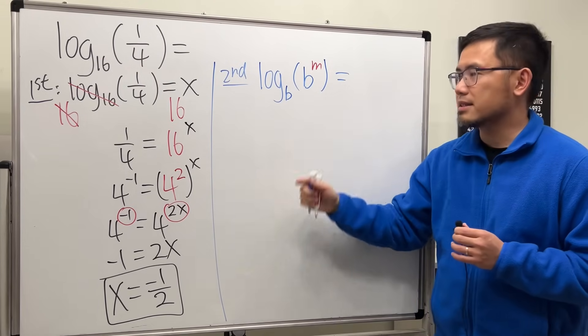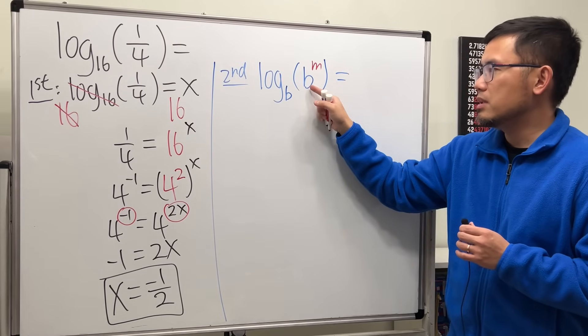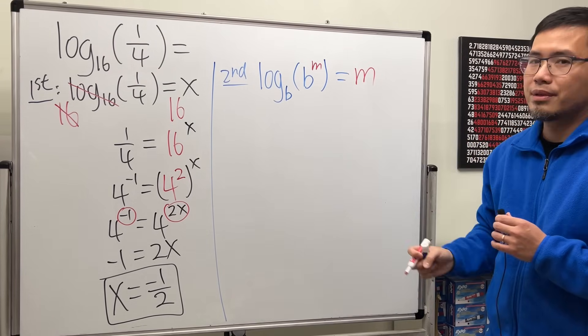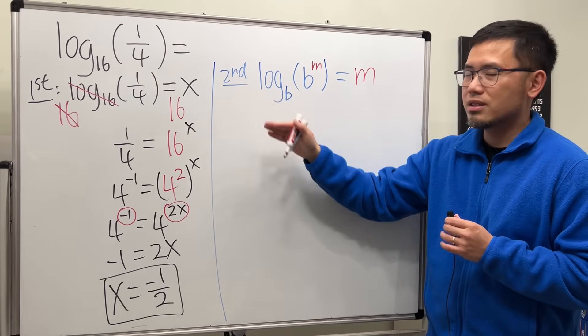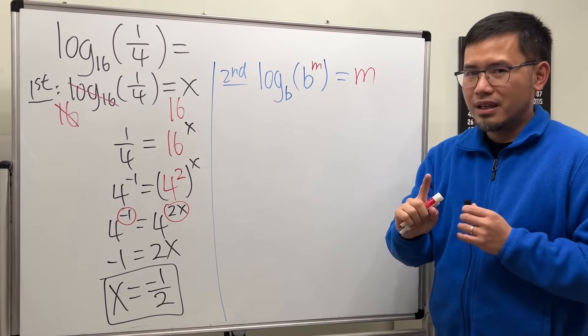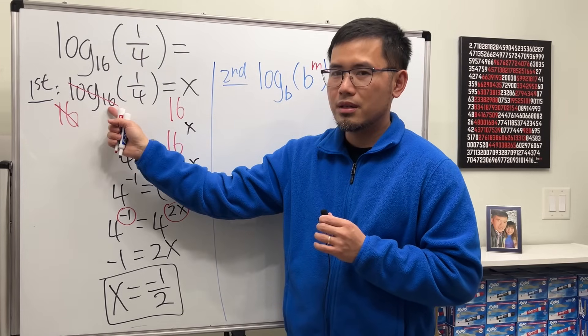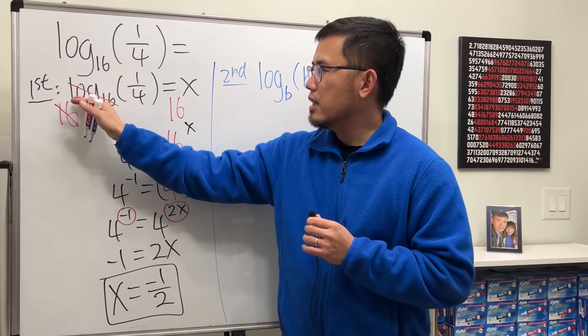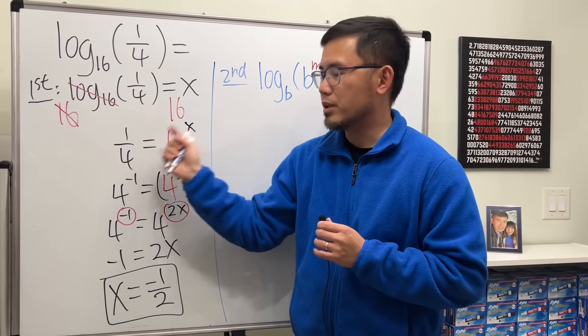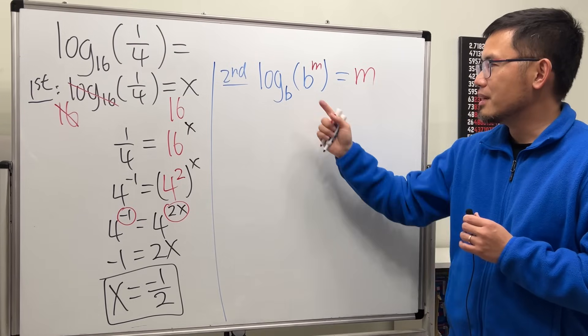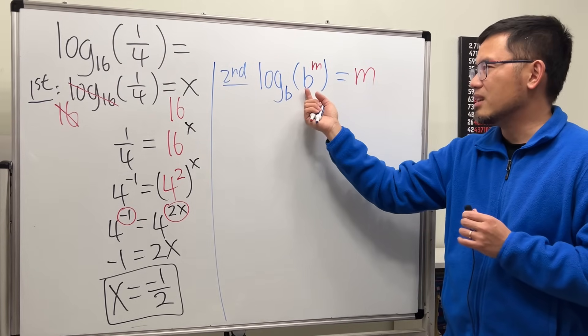In this case, log base b and this b, they cancel. You just get the m back again, because log is the inverse of exponential. And notice that's exactly what happened here. 16 and log base 16, they cancel, so that's how we get a 1 over 4. Here is log on the outside and then b to the m inside.